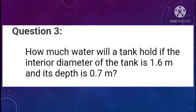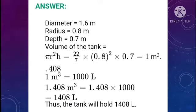Question 3: How much water will a tank hold if the interior diameter of the tank is 1.6 m and its depth is 0.7 m? Diameter = 1.6 m, so radius = D/2 = 1.6/2 = 0.8 m. Depth = 0.7 m. Volume of the tank = πR²H = (22/7) × 0.8 × 0.8 × 0.7 = 1.408 m³.